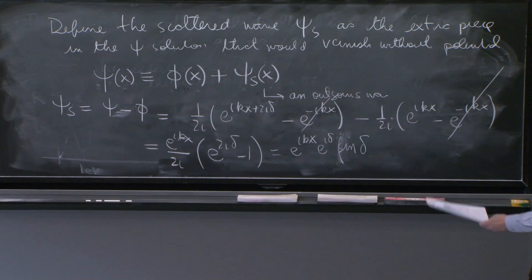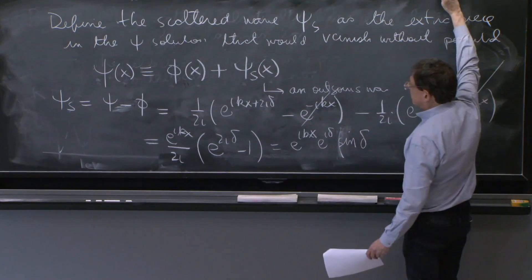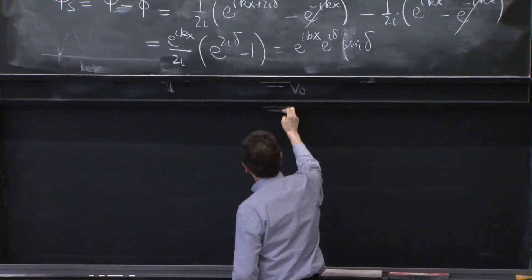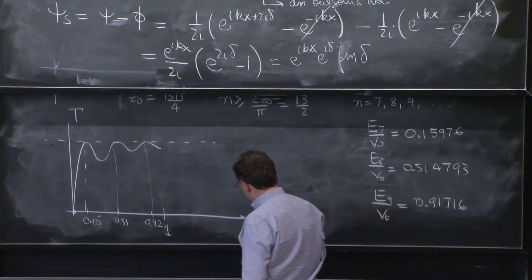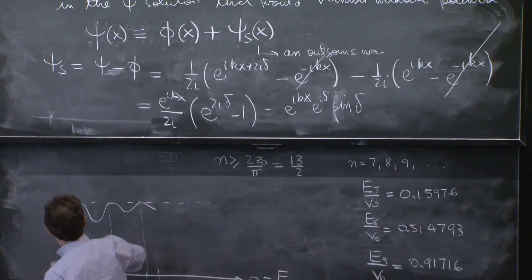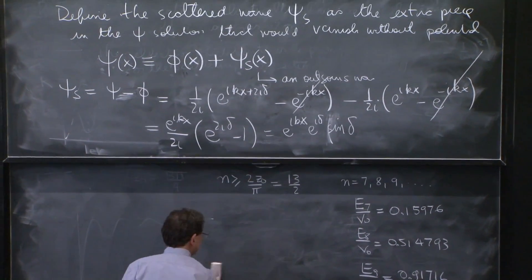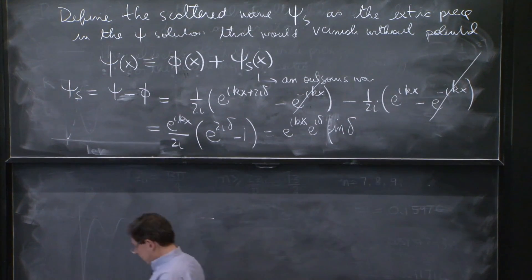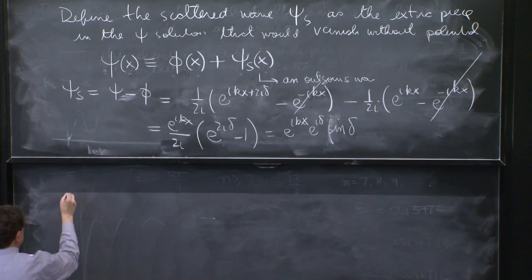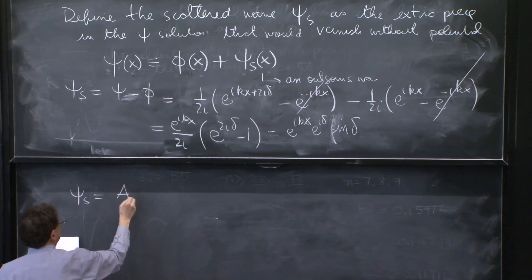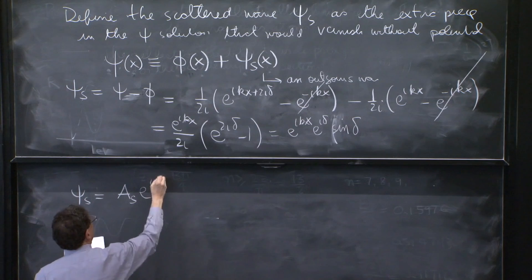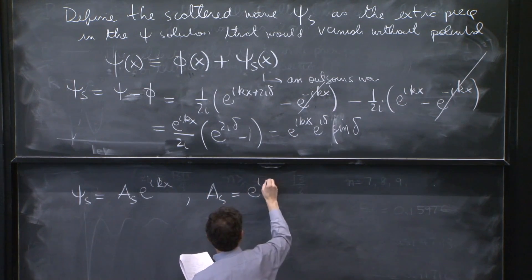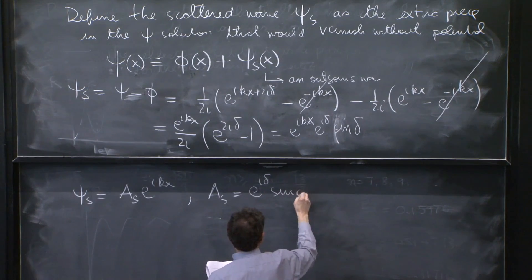So there we go. We have the answer for the scattered wave. It's proportional to sine delta, which is, again, makes sense. If delta is equal to 0, there is no scattering. It's an outgoing wave, and all is good. So I'll write it like this. Psi s is equal to as e to the ikx with as equal e to the i delta sine delta.